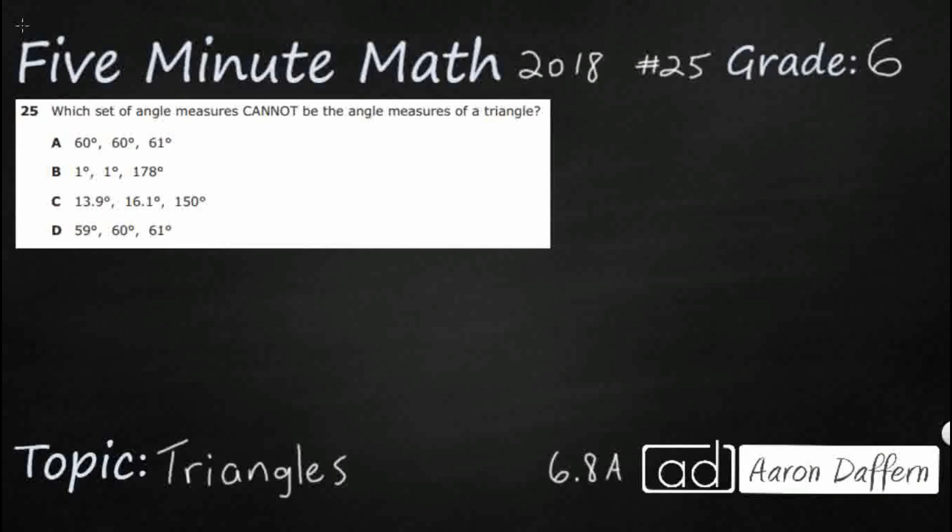So we have four different sets of angle measures, and only one of them cannot be the angle measures of a triangle. So what does that mean, the angle measures?